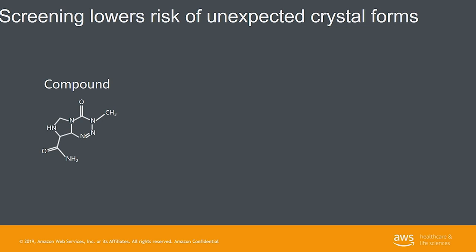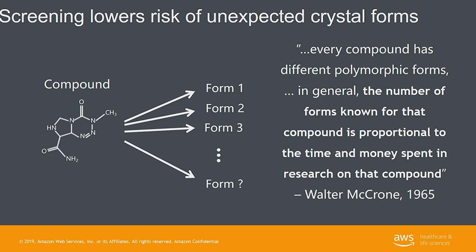After that, pharmaceutical companies and regulatory agencies started taking crystal form way more seriously and required long experimental tests to find all of the different crystals. Experimentally, you can do many different tests to try to make all these different forms, but you'll never know that you found them all. After three months you find a form, after a year you find another — there's always the risk that a more stable form will appear. A scientist said in 1965 that the number of crystal forms is directly proportional to the amount of work that had gone into looking for them, which was very scary because that meant any drug on the market could one day convert to a more stable form.